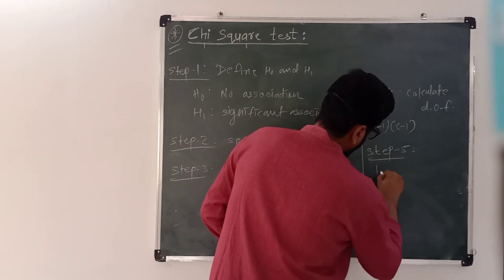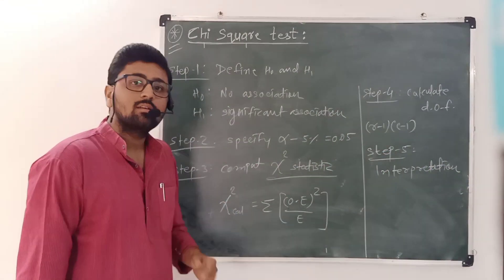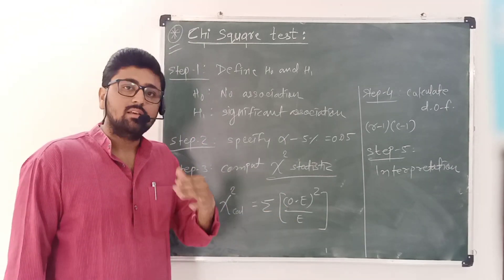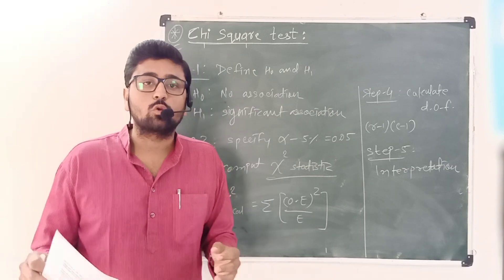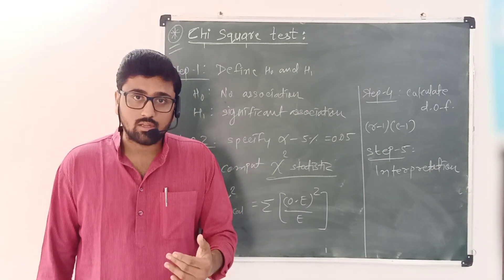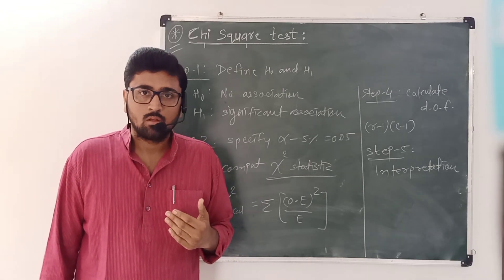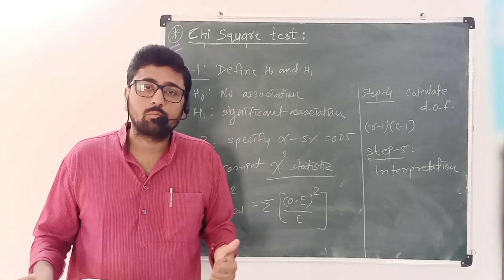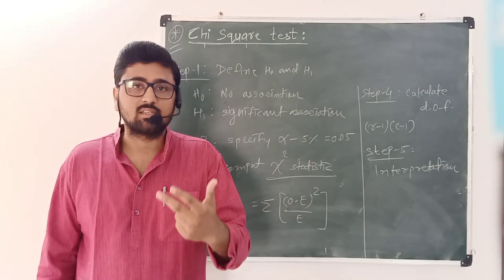Step 5: Interpretation. If chi-square calculated is higher than chi-square tabulated, the null hypothesis is rejected, and we conclude that there is a significant association between two categorical variables. If chi-square calculated is lower than chi-square tabulated, we fail to reject the null hypothesis and conclude that there is no association between two categorical variables. This is the concept of the chi-squared test — a distribution-free test used to examine the association between two categorical variables.